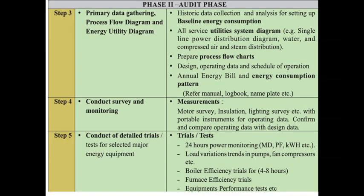Phase 2 is the audit phase. Step 3 is primary data gathering, creating process flow diagrams and energy-utility diagrams. This includes analysis of historical data, LQM data, and analysis of baseline energy consumption. The utility system diagram covers power lines, water lines, compressor lines, and steam distribution. The annual energy bill and energy consumption pattern are also required.